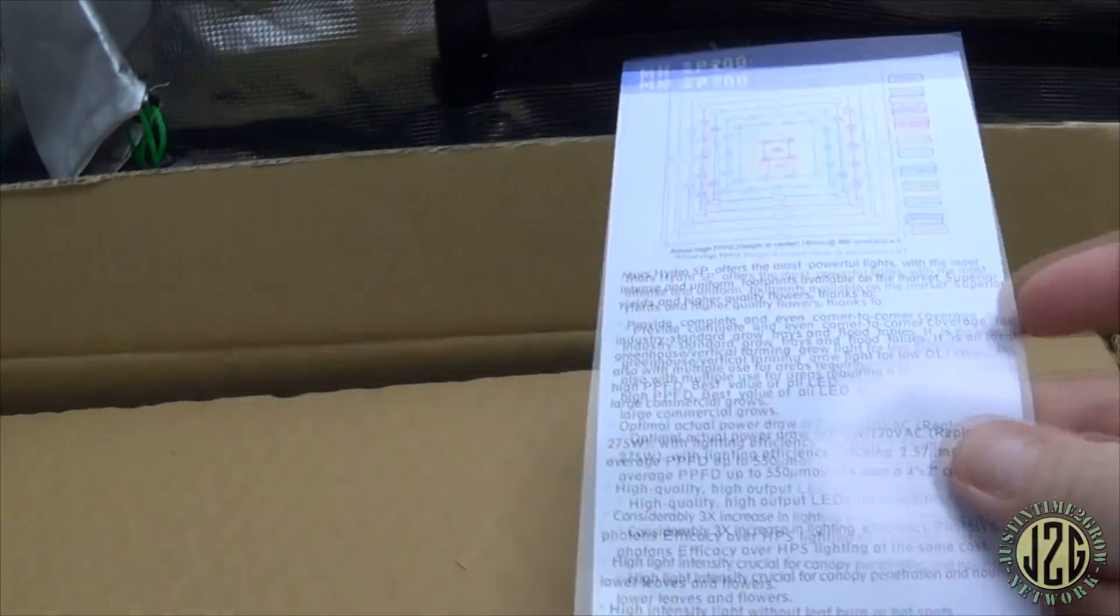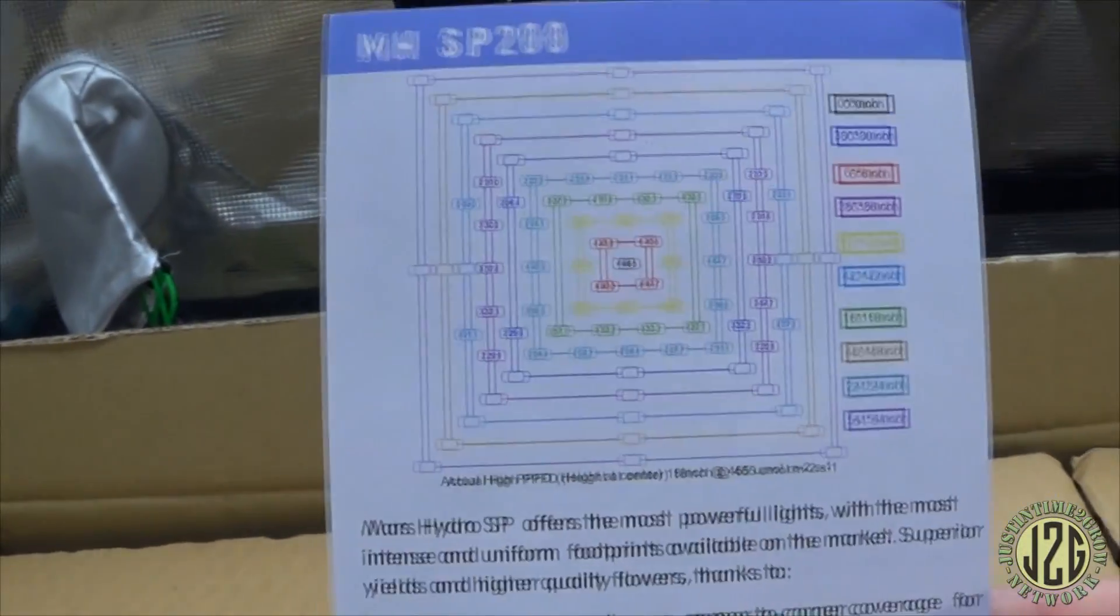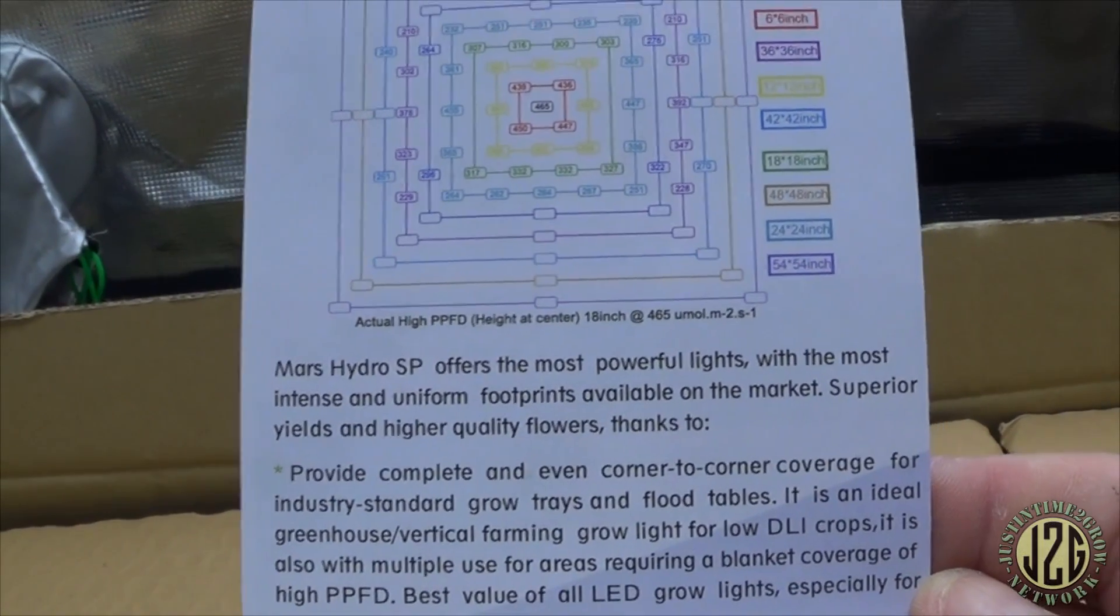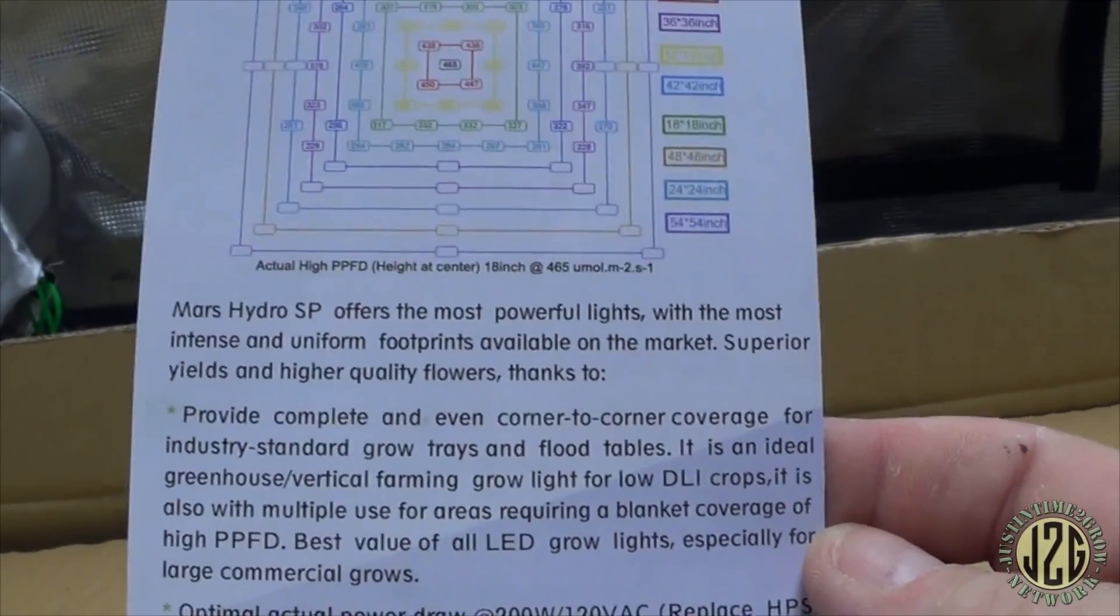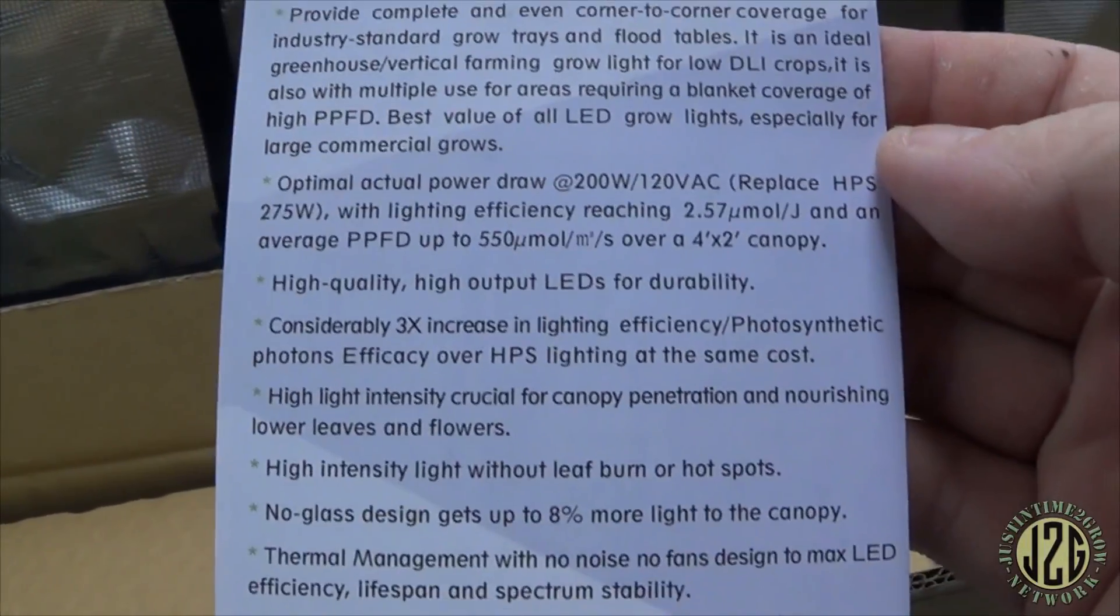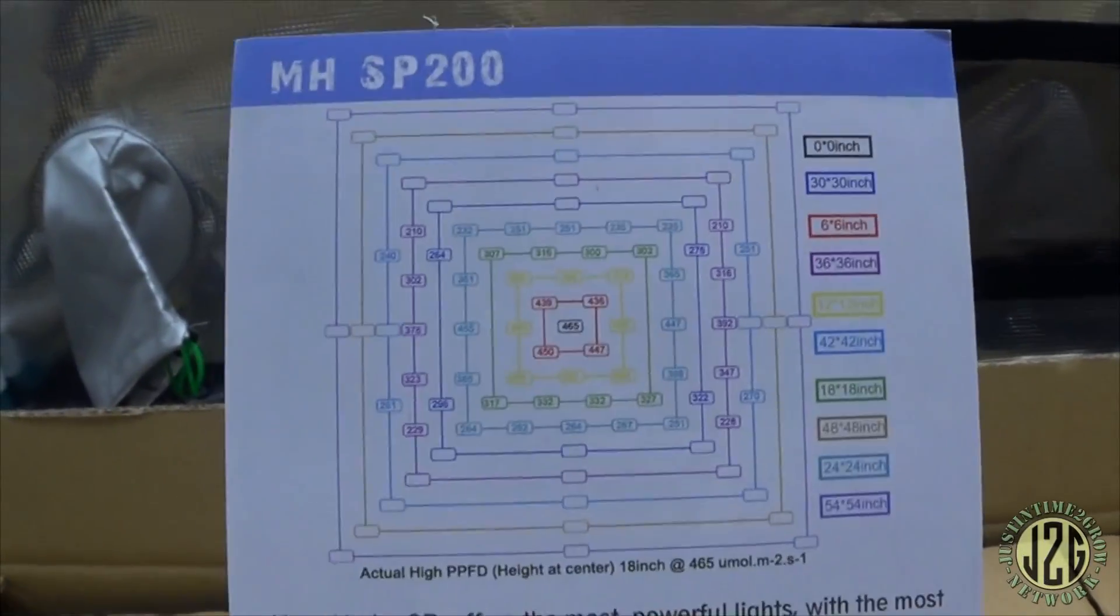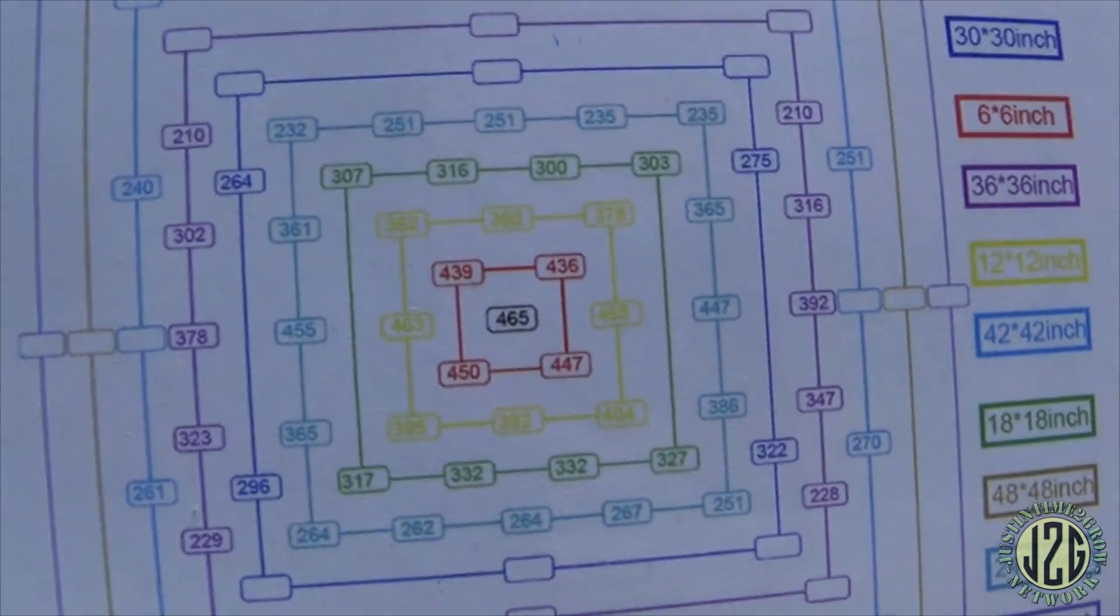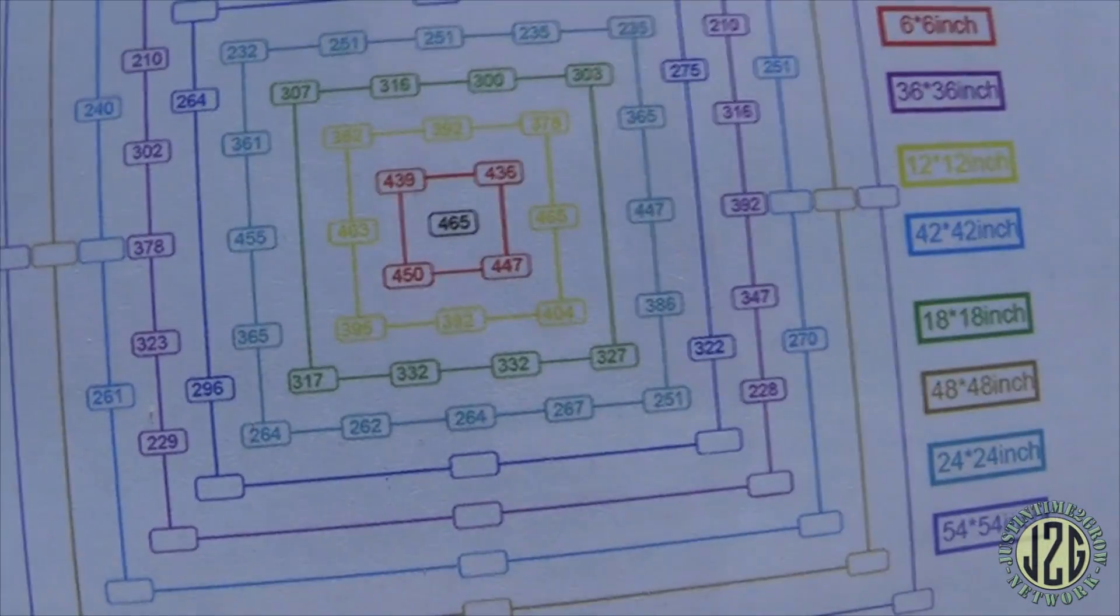Alright, so what do we got? First off, SP 200 - one of the most powerful lights with the most intense uniform footprints available on the market. Superior yields and high quality flowers thanks to a whole bunch of features. That's cool, well let's see if it'll match those numbers.